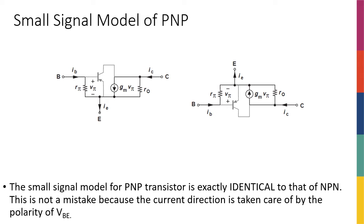If the large signal model of PNP was pretty much similar to NPN, the small signal is identical — I mean exactly identical to the NPN. So absolutely no change from NPN to PNP. If you look at these two small signal models, this one is for NPN and this one is for PNP. Basically, even the direction of the currents are the same and the values of the resistances. We don't even have to convert VBE to VEB or anything like that. The small signal model of a PNP transistor is exactly identical to that of an NPN.